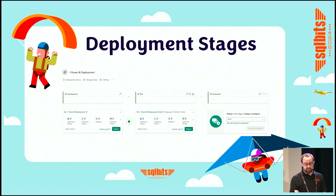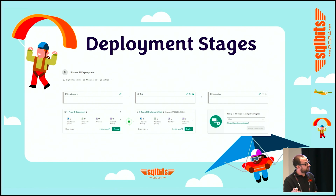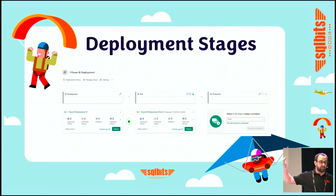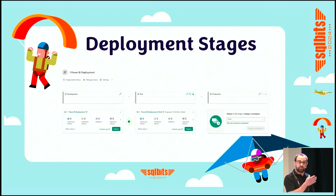Touching on those deployment stages again — we've got our development, test, and production stage. As we've created our test environment, it's created a new workspace, but production hasn't been assigned to a workspace yet. We may already have a production workspace elsewhere in the service, maybe on a different capacity. We can go and pick that from the dropdown and assign it to our production stage, and the deployment pipelines will then allow us to move content between the stages.